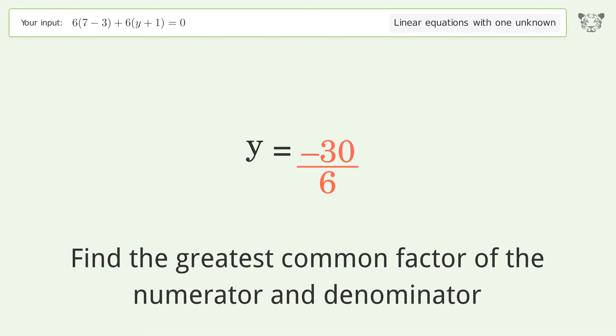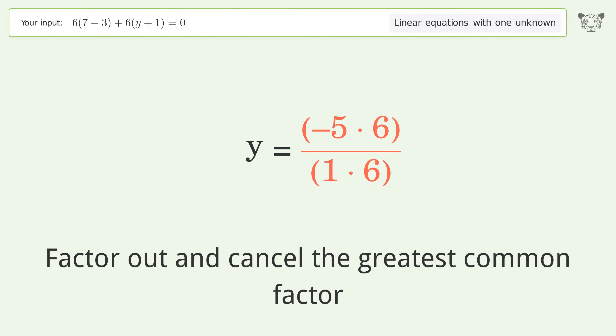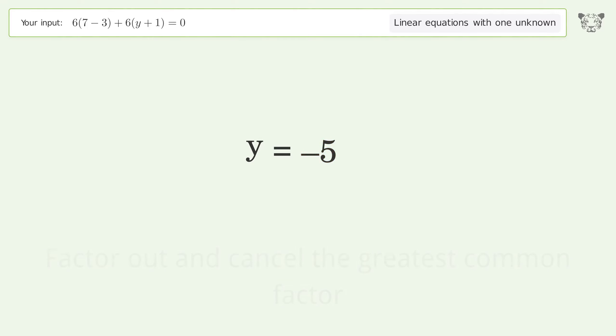Find the greatest common factor of the numerator and denominator. Factor out and cancel the greatest common factor. And so the final result is y equals negative 5.